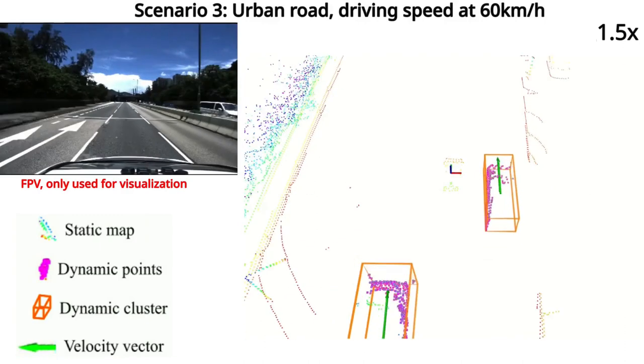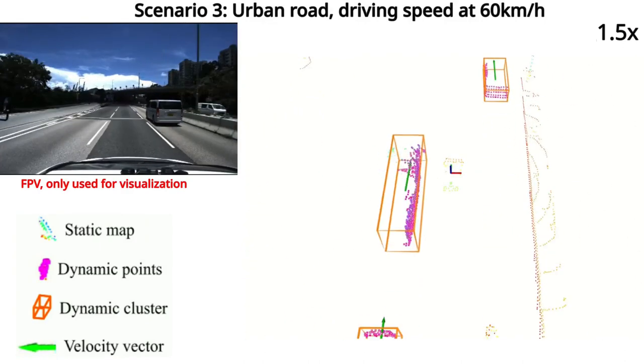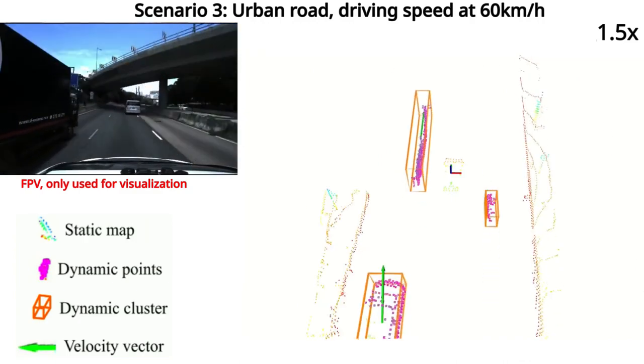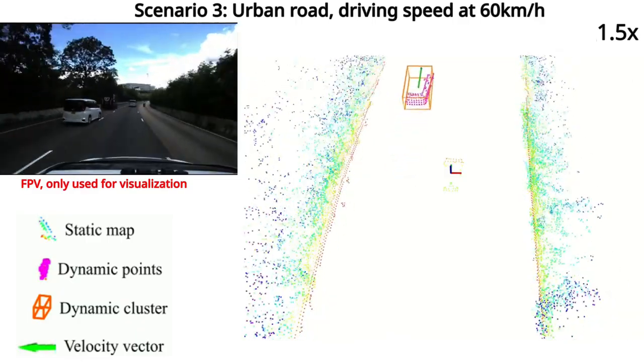We also test our algorithm using point cloud data of a car driving on an expressway with a speed of around 60 kilometers per hour, which demonstrates that our method can still perform robustly even with high-speed ego motion.